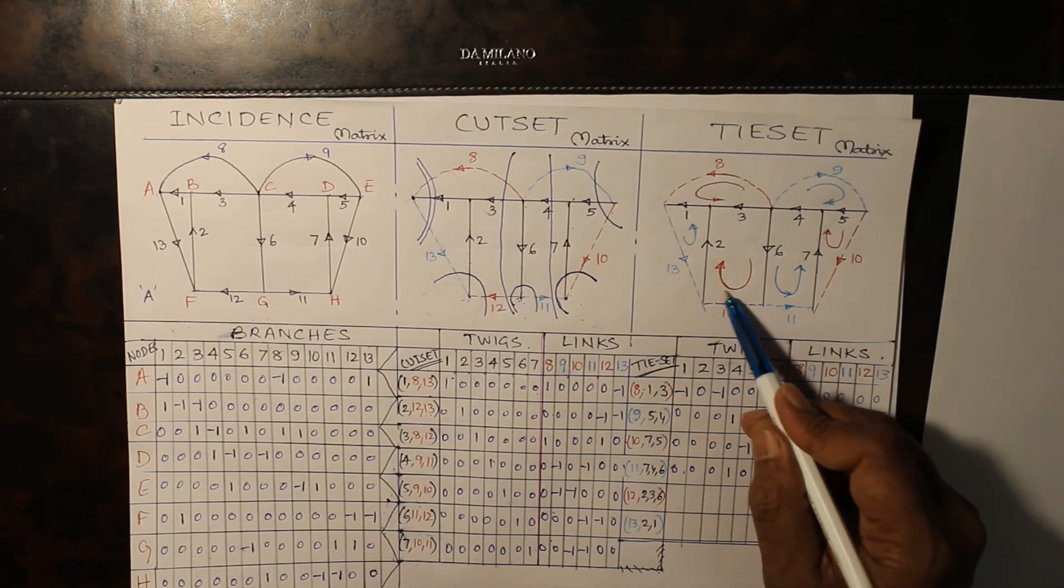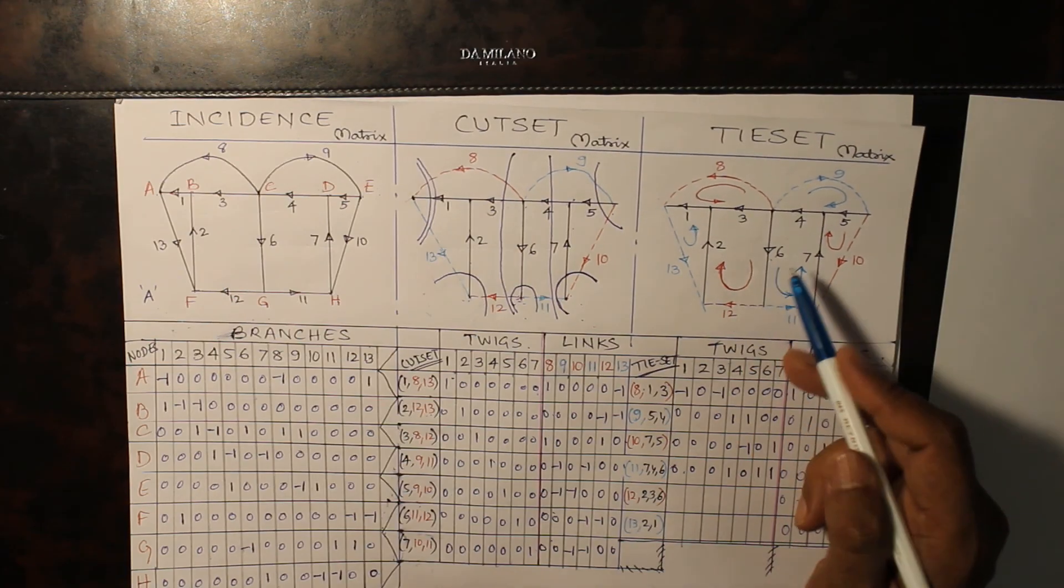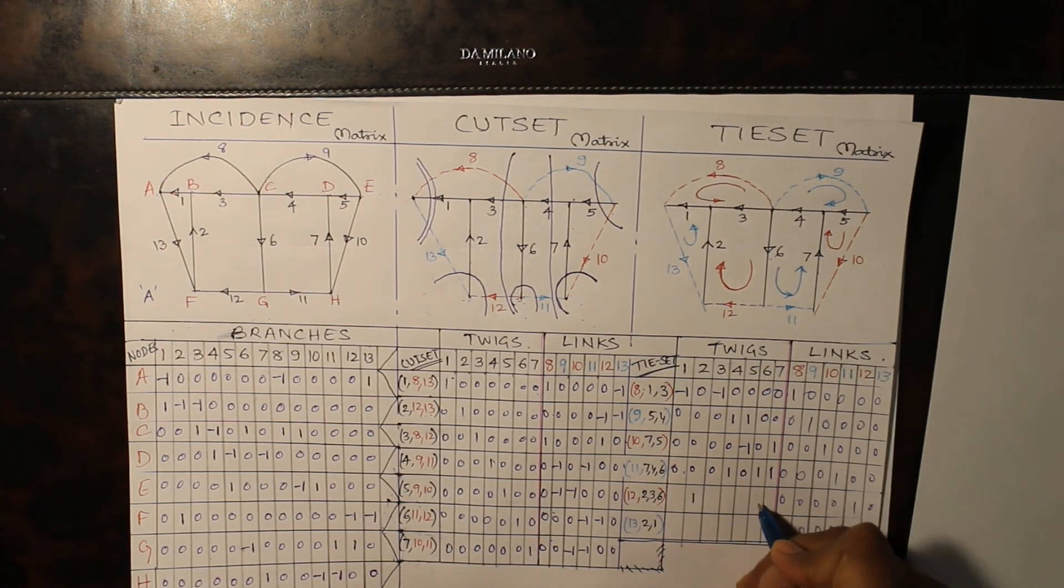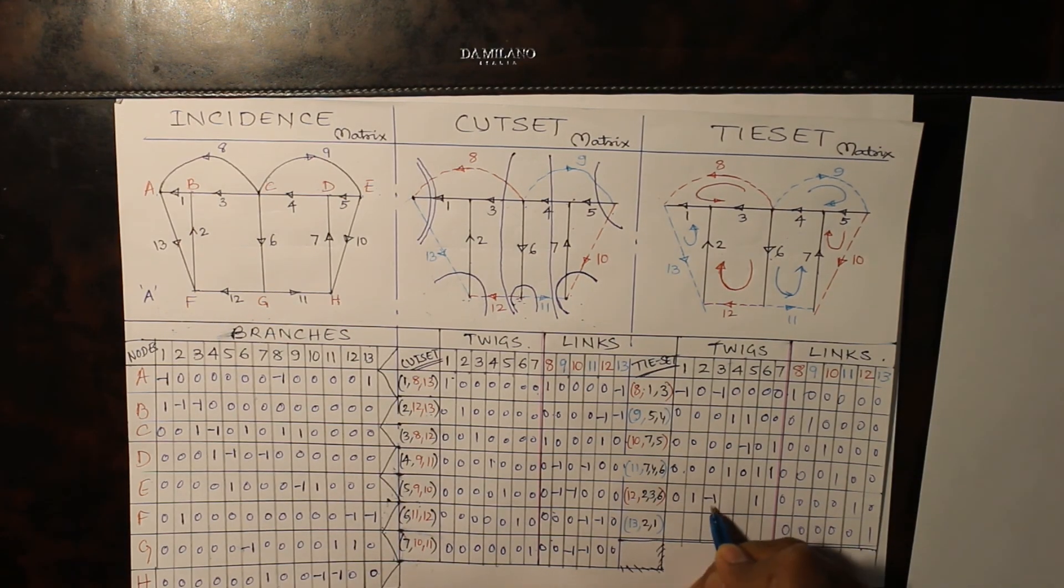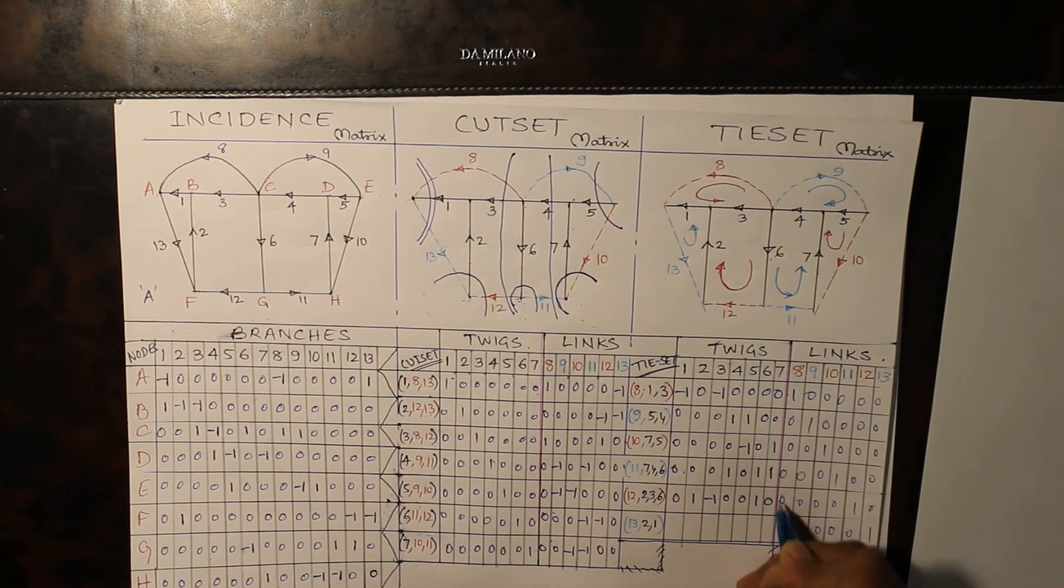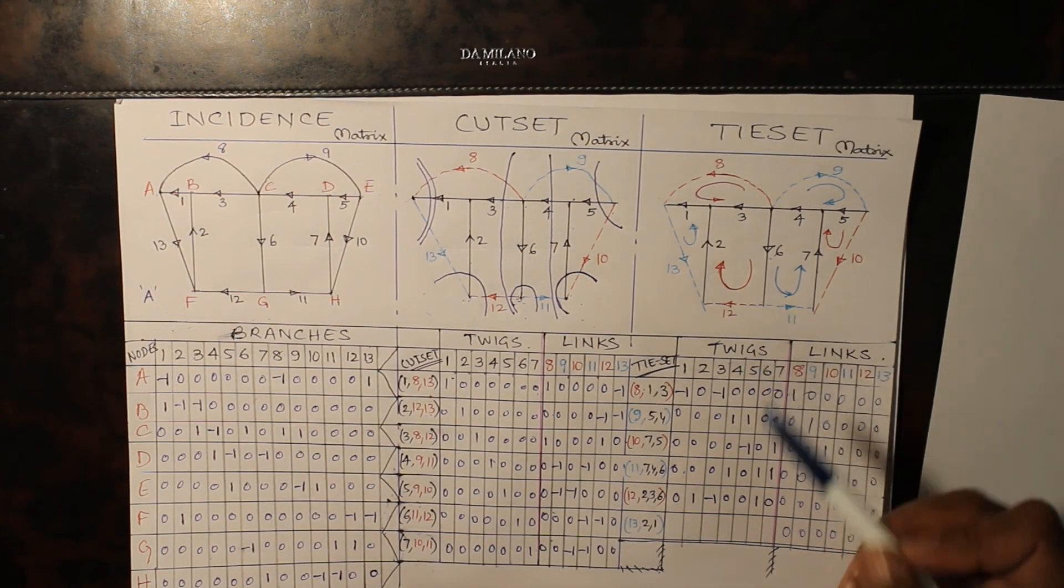For 12. 2, same direction. 6, same direction. So, for 2 and 6 plus 1. And for 3, minus 1. The rest are zeros. And 13. 2, same direction. 1, also same direction.